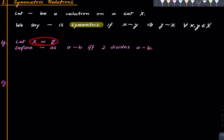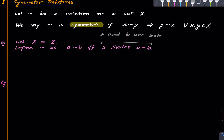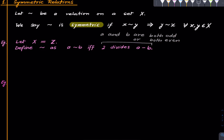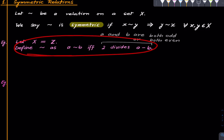Suppose X is the set of all integers and define a tilde b if two divides the difference of a and b — in other words, a and b are either both odd or both even. We say two things are related if they have the same parity. This is symmetric because if 2 divides (a − b), then it divides (b − a) as well.